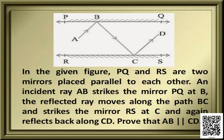Here is the next question. PQ and RS are two mirrors placed parallel to each other. An incident ray AB strikes mirror PQ at B. The reflected ray moves along path BC and strikes mirror RS at C, then reflects back along CD. We have to prove that AB and CD are parallel.